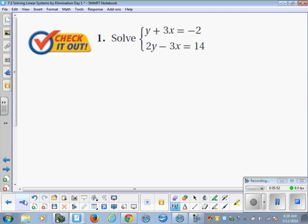Okay, so our first step is to write it so x is on top of x and y is on top of y. And that's already been done for us. Okay, then our next step is to add it together so that it eliminates one of the variables. And in this case, we get 3y. And the x's cancel out in this case. And that's equal to 12. Divide both sides by 3. And we get y equals 4.